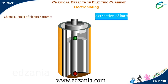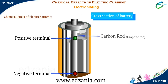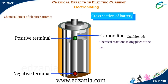This is the internal structure of a dry cell. Each dry cell has two terminals — one is positive and the other is negative terminal. These terminals are called the two electrodes of the cell. Between these two electrodes lies a carbon rod surrounded by some chemicals which provides the chemical energy to the cell.